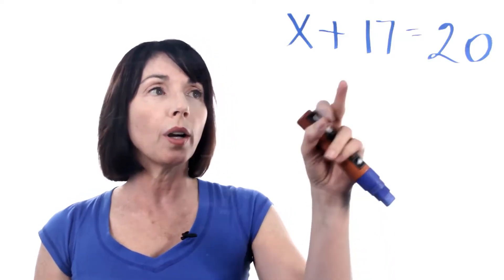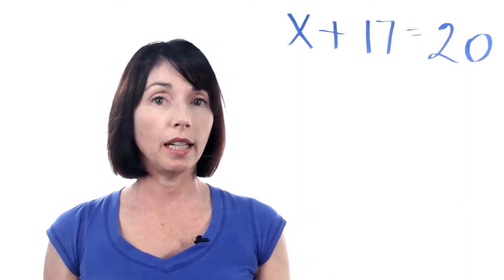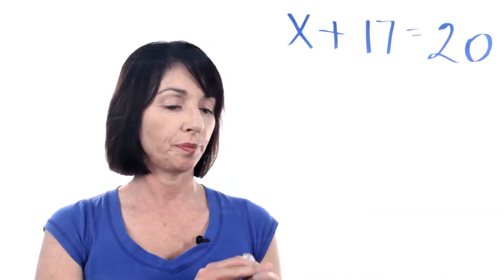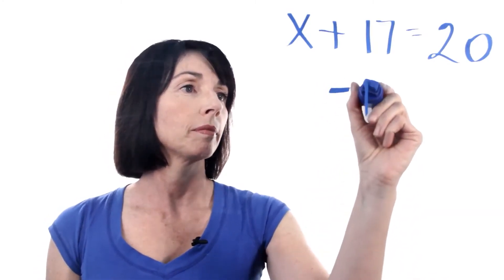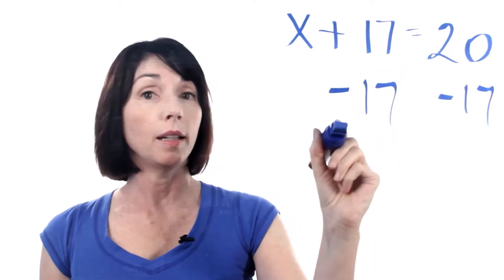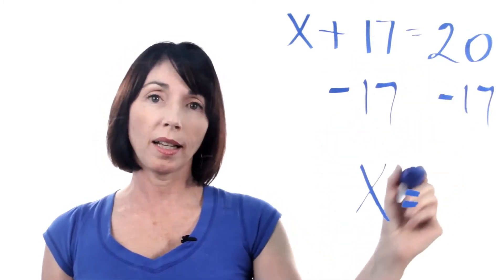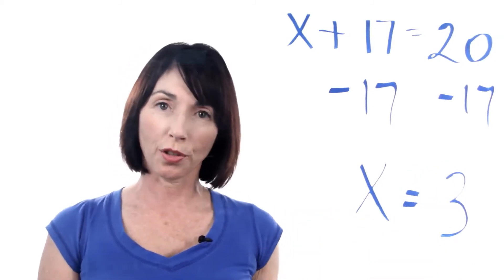So in this case we're adding something to X and that's 17. So what we're going to do is subtract 17 from both sides of the equation. So X plus 17 minus 17 just leaves us with X and 20 minus 17 gives us 3. So X equals 3.